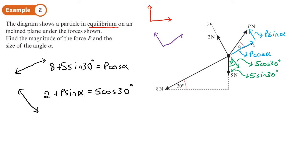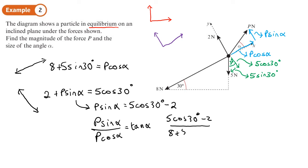So we're going to have to solve these simultaneously. Now what we can do is we can take this second equation here. And if we write it as P sin alpha equals 5 cos 30 minus 2. And what we can do is we can do this equation divided by this equation to get tan alpha. So if we now write, P sin alpha divided by P cos alpha is tan alpha. And we can use that to find alpha. Now what is P sin alpha? Well, it's this 5 cos 30 minus 2. And what is P cos alpha? Well, it's that 8 plus 5 sin 30. Now that equals tan alpha.